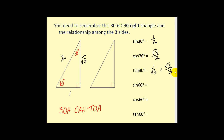Let's go ahead and try the same from the 60 degree angle. The sine of 60 degrees is opposite over hypotenuse, which is square root of three over two. The cosine of 60 degrees is adjacent over hypotenuse, or one half. And the tangent of 60 degrees is opposite over adjacent, which is the square root of three. So that was pretty quick and easy.